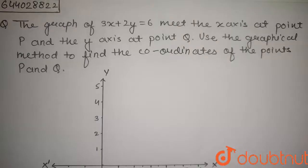The question is: the graph of 3x + 2y = 6 meets the x-axis at point P and the y-axis at point Q. Use the graphical method to find the coordinates of points P and Q.